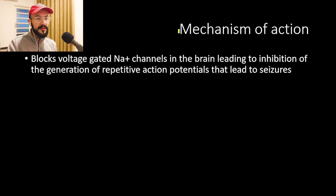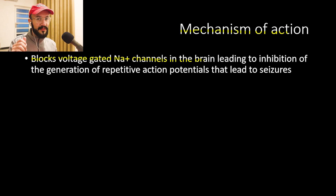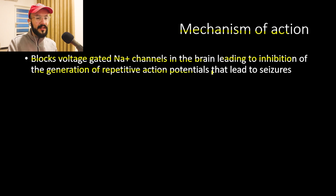Now let's move on to talk about the mechanism of action of this medication. It is used in treatment of seizures by blocking the voltage-gated sodium channels in the brain. When we want to treat a seizure, we either have to block the sodium channels, enhance the inhibitory neurotransmitter GABA, or block the excitatory neurotransmitters. Carbamazepine works by blocking the sodium channels — the same mechanism as phenytoin — except phenytoin blocks sodium channels in both the brain and the heart, while carbamazepine blocks them in the brain only. This leads to inhibition of repetitive action potentials that cause seizures, thereby stopping or preventing the seizure.